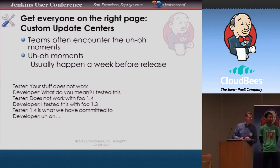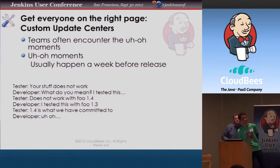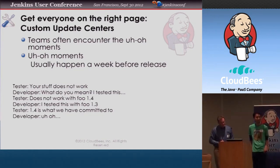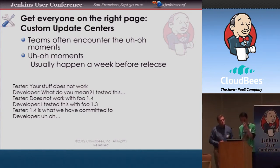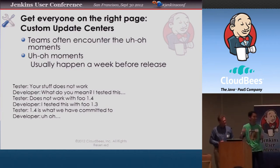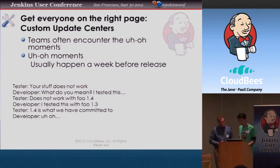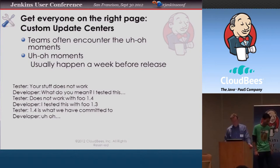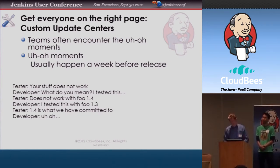There was a question about what happens when you change the job template itself — then it updates all the jobs, and the change automatically gets propagated to all the jobs right away. Another question was whether the template plugin is free — unfortunately the template plugin is not free. The folders plugin is free, and the backup to cloud is free. I think that's basically it for the free plugins. Perhaps we can do a quick recap at the end when we've shown all the different plugins, to make clear which ones are part of the free pack and which ones are part of the subscription.